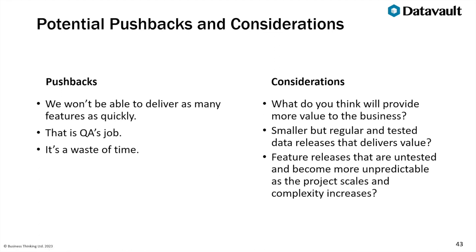When starting a new project you may face some pushbacks — things like 'we won't be able to deliver as many features as quickly' or 'that's QA's job, it's a waste of time.' The thing to consider is: what provides more value to the business — smaller but regular and tested data releases that deliver value, or untested feature releases that become more unpredictable as the project scales in complexity? As the project grows, how are you going to know that a new feature won't break everything and cost two to three days of fixing?